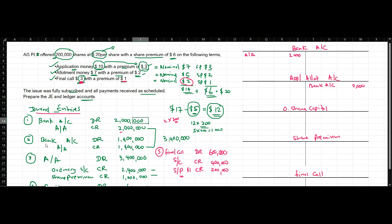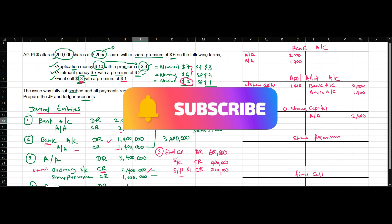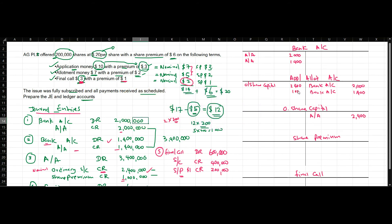Allotment money received: bank account debited with $1,400 and application and allotment account credited with $1,400. Upon allotting the shares, the nominal value of $12 per share times 200,000 shares equals $2,400, so application and allotment account is debited and ordinary share capital account is credited with $2,400.